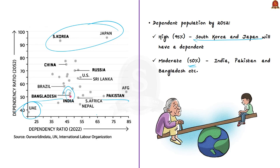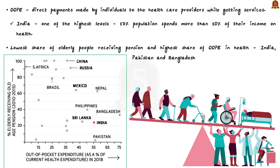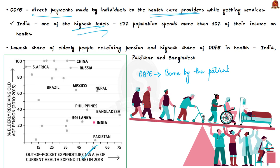The last graph covers out-of-pocket expenditure — the direct payments made by individuals to healthcare providers at the time of receiving services, especially when insurance does not cover the full cost. India has one of the highest levels of out-of-pocket expenditure in the world; already 17% of our population spends more than 10% of their income on health, higher than the global average.